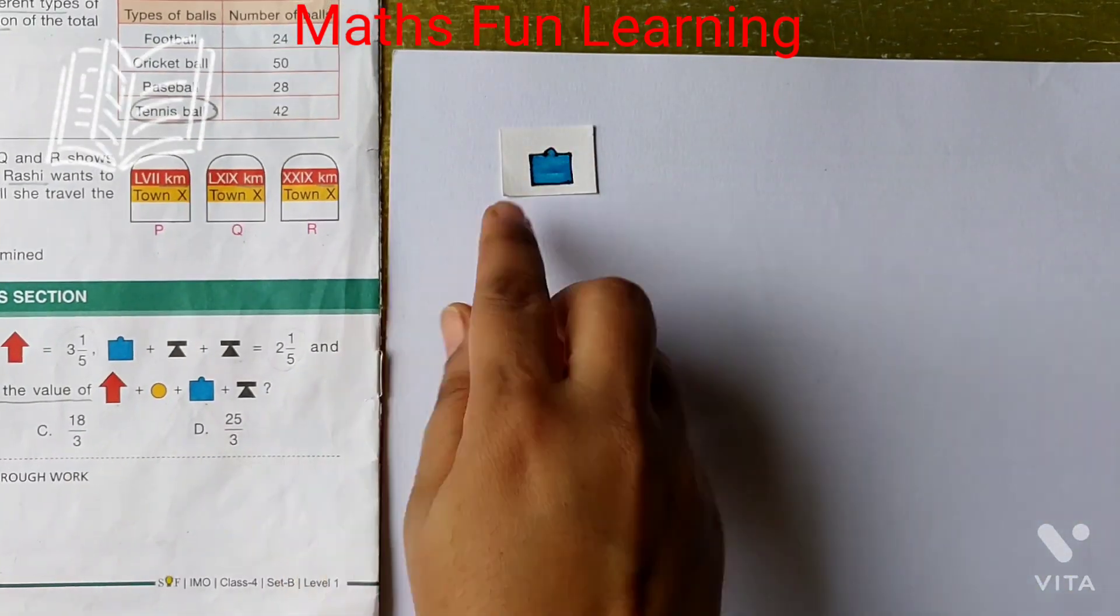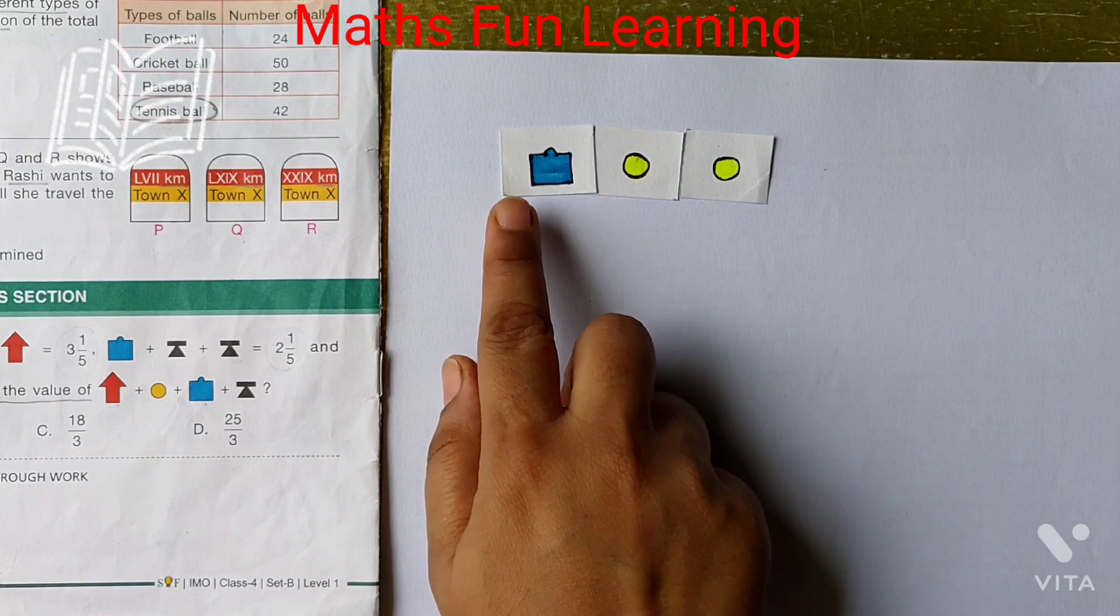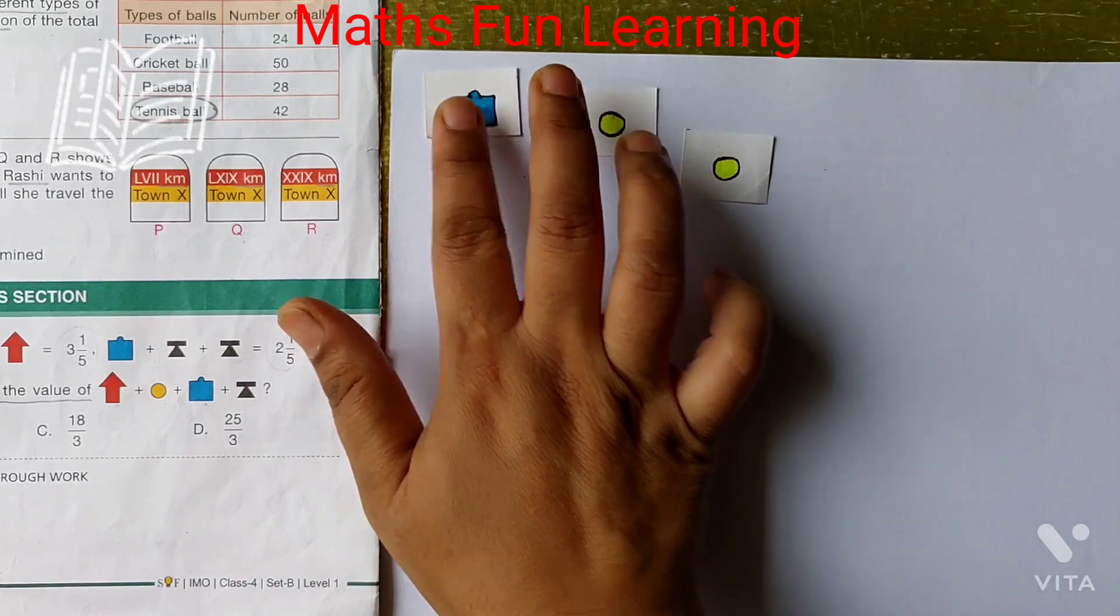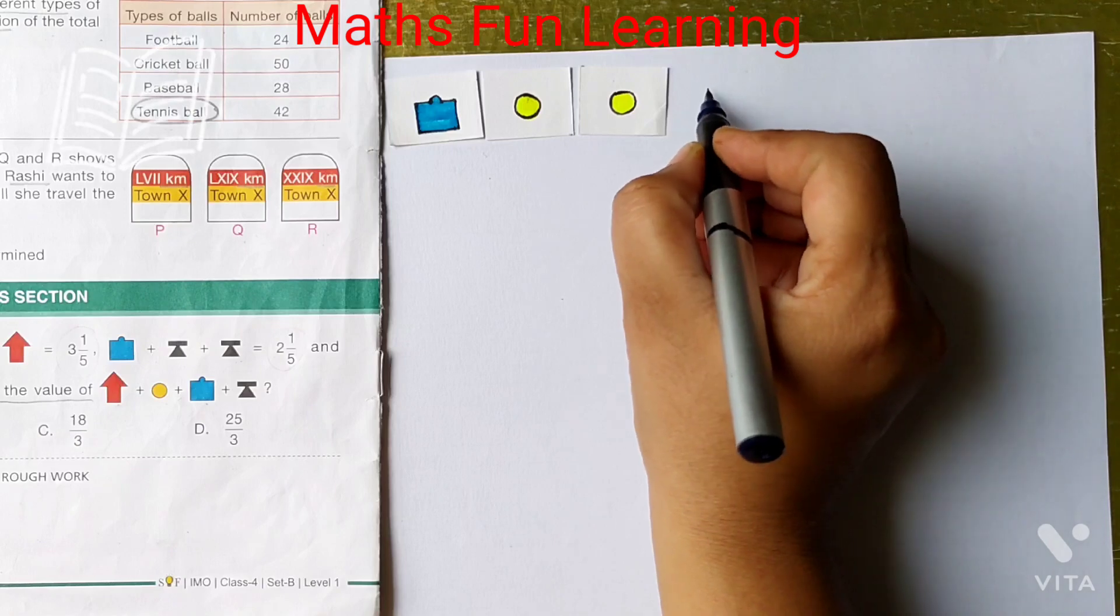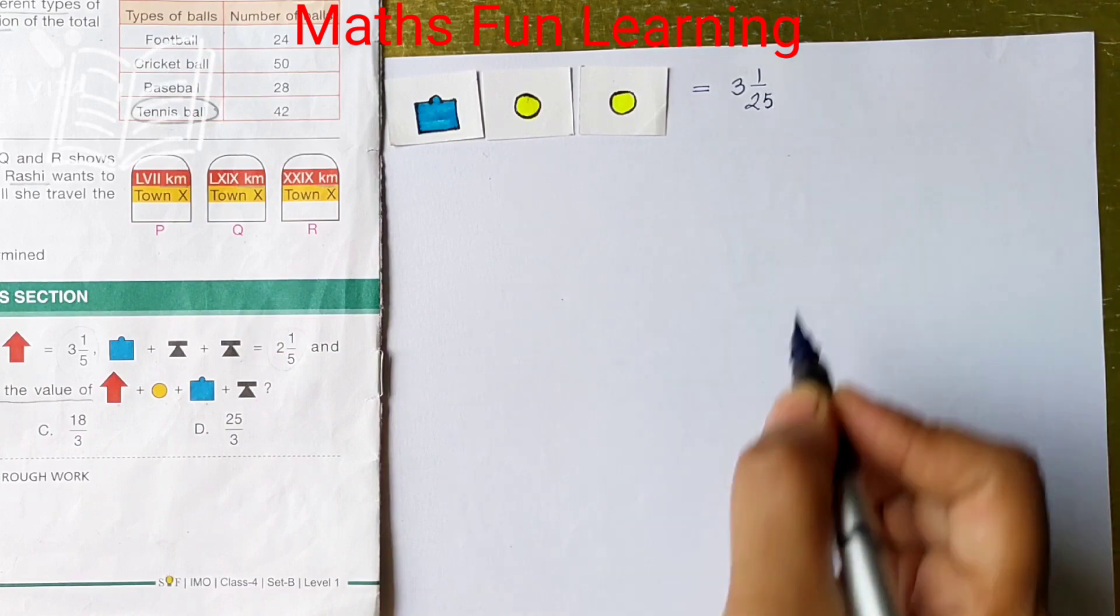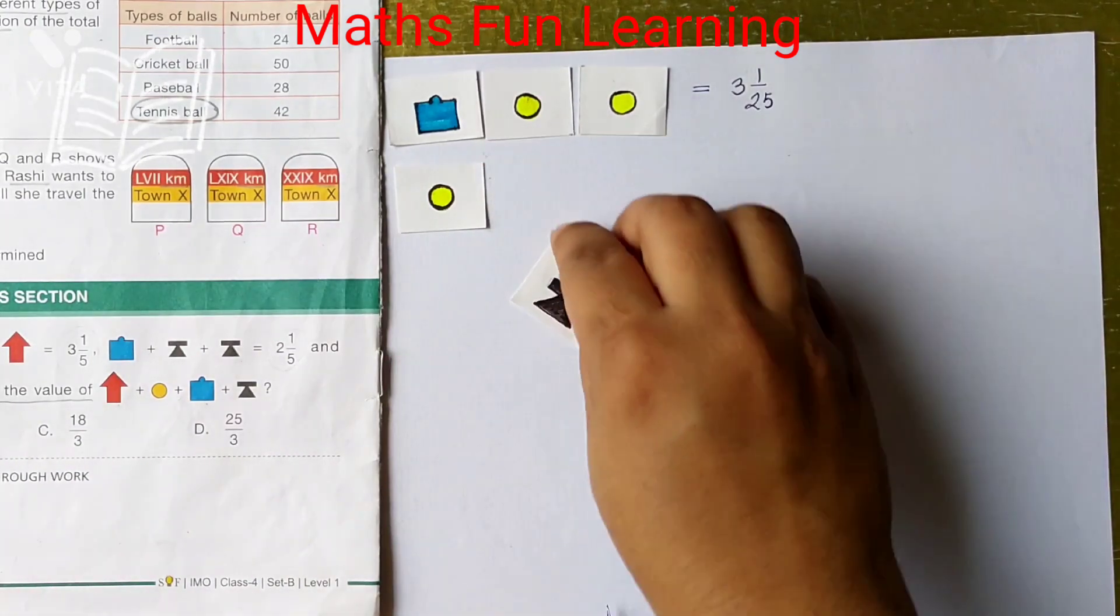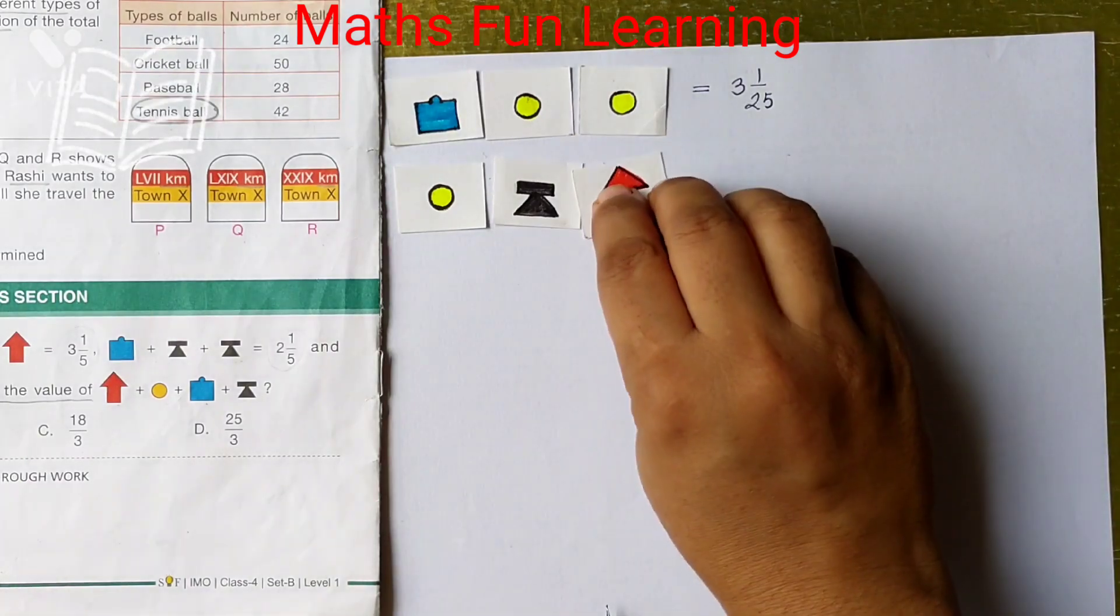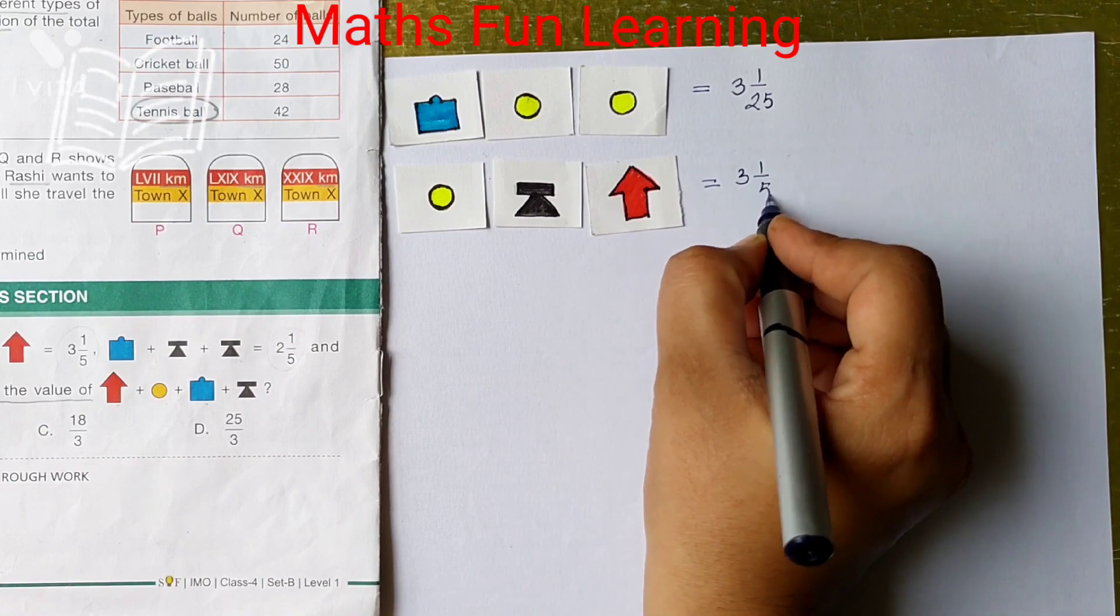If you can observe that this blue plus yellow plus yellow which is equal to 3 and 1 by 25. Now, next is yellow plus black plus red which is equal to 3 and 1 by 5.